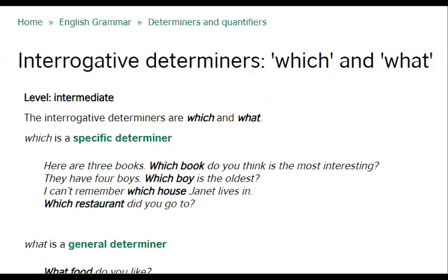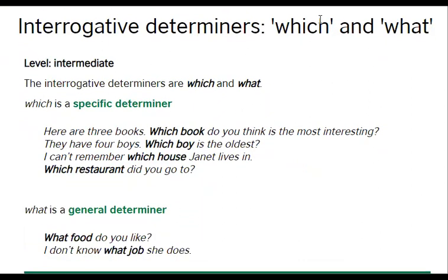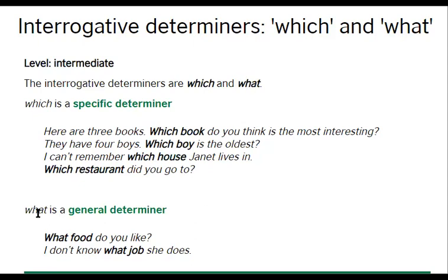Interrogative Determiners: Which and What. The interrogative determiners are two in number — number one: 'which', and number two: 'what'. 'Which' is a specific determiner — it talks about specific things, just like the definite article 'the'. For example: 'Here are three books — which book do you think is the most interesting?' 'They have four boys — which boy is the oldest?' 'Which restaurant did you go to?' On the other hand, 'what' is a general determiner: 'What food do you like?' 'I don't know what job she does.'